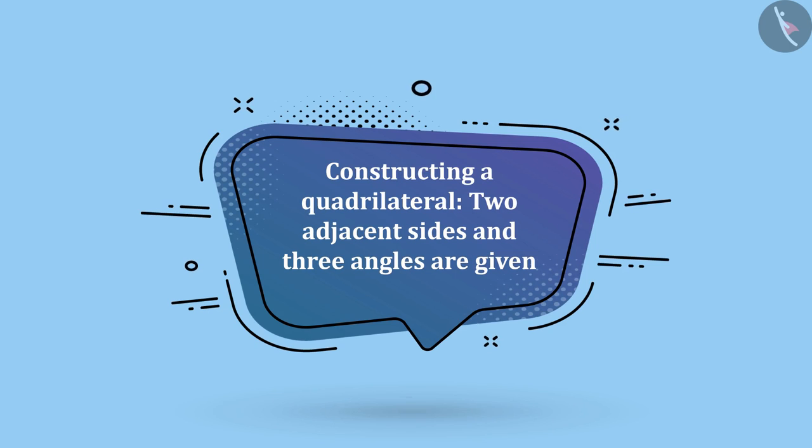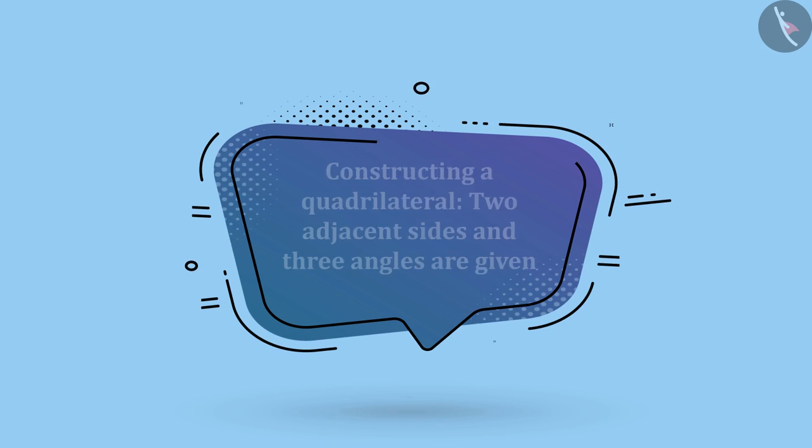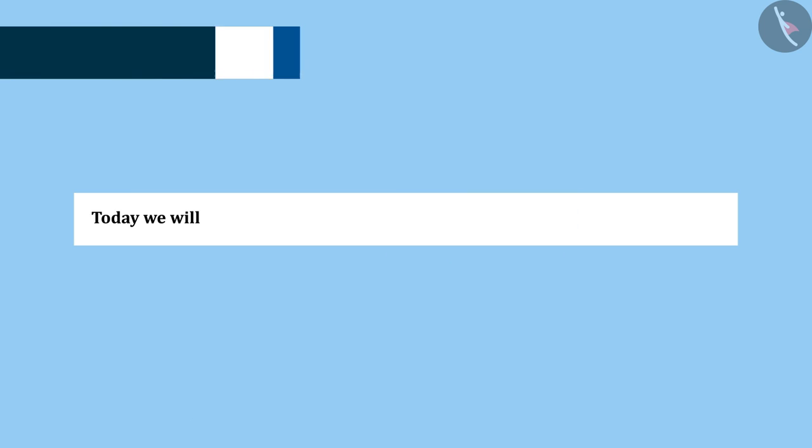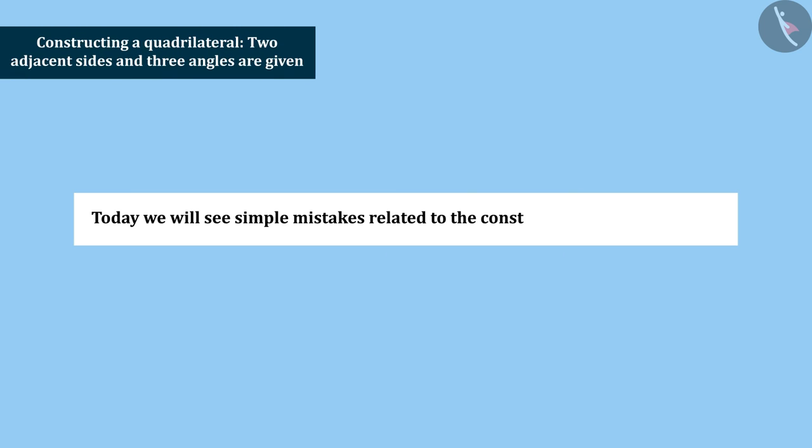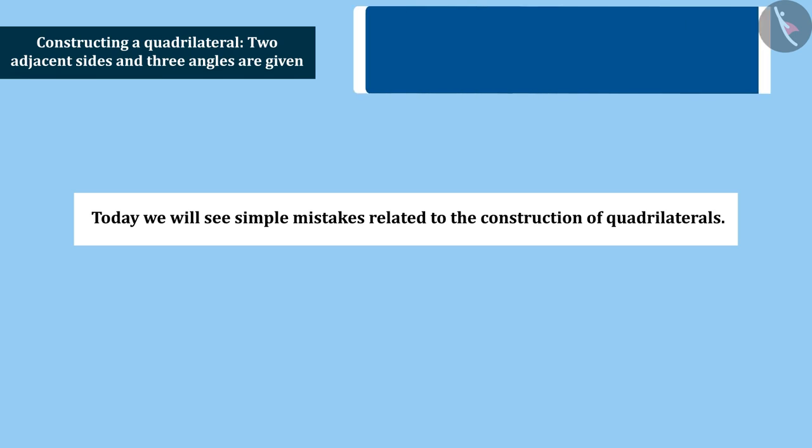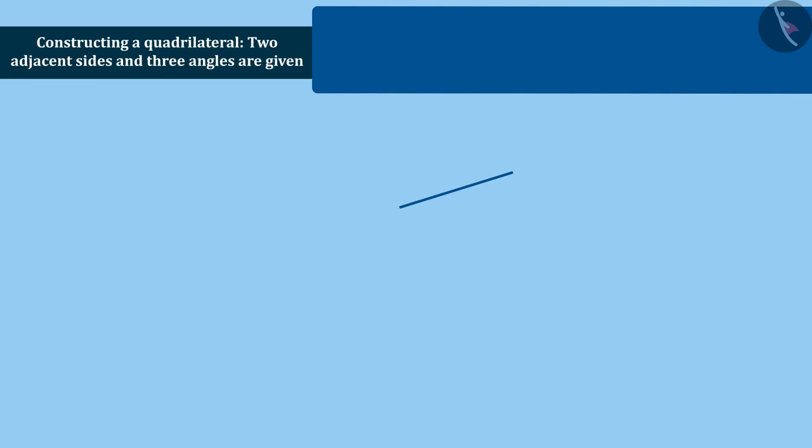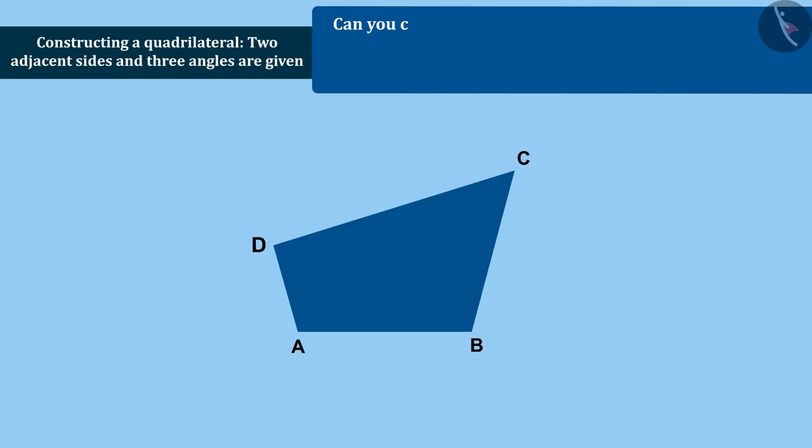Welcome all of you to this video. Today we will see simple mistakes related to the construction of quadrilaterals. Can you construct a quadrilateral ABCD if AB equals 7 centimeters?